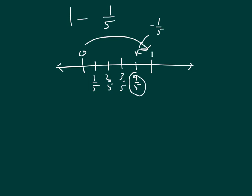1 also does equal 5 fifths, so 5 fifths minus 1 fifth does equal 4 fifths, which is what our number line is showing.